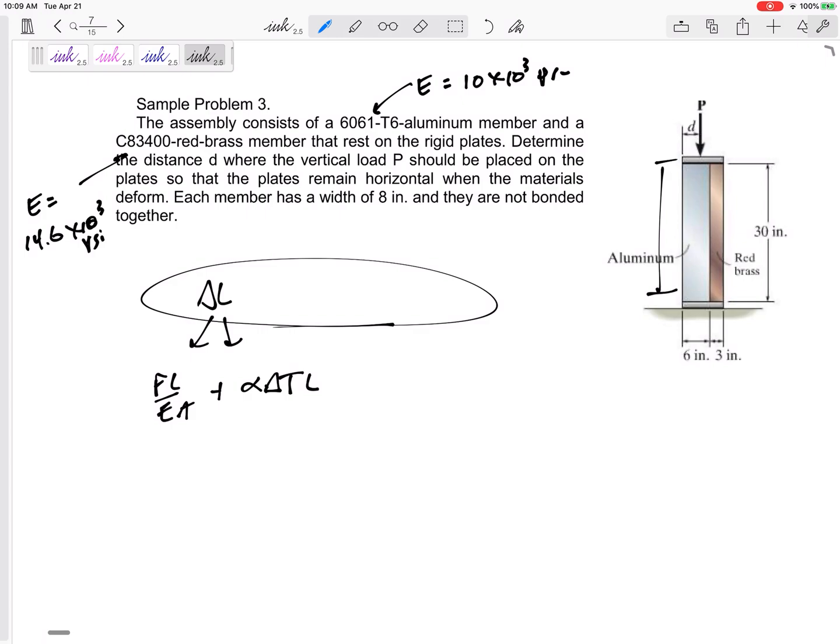For this one, I would say that the delta L of the aluminum is equal to the delta L of the brass. We don't have temperature. The delta L of aluminum equals delta L of the brass and the delta L is FL over EA. That's somewhere on your formula sheet, but you can memorize that. Your compatibility: write a sentence, write an equation stating something about your delta Ls. Maybe they add up to zero, they add up to a gap, or they're equal to each other, or they're a ratio of each other. Delta L is FL over EA, and alpha delta T L if you have a temperature change.